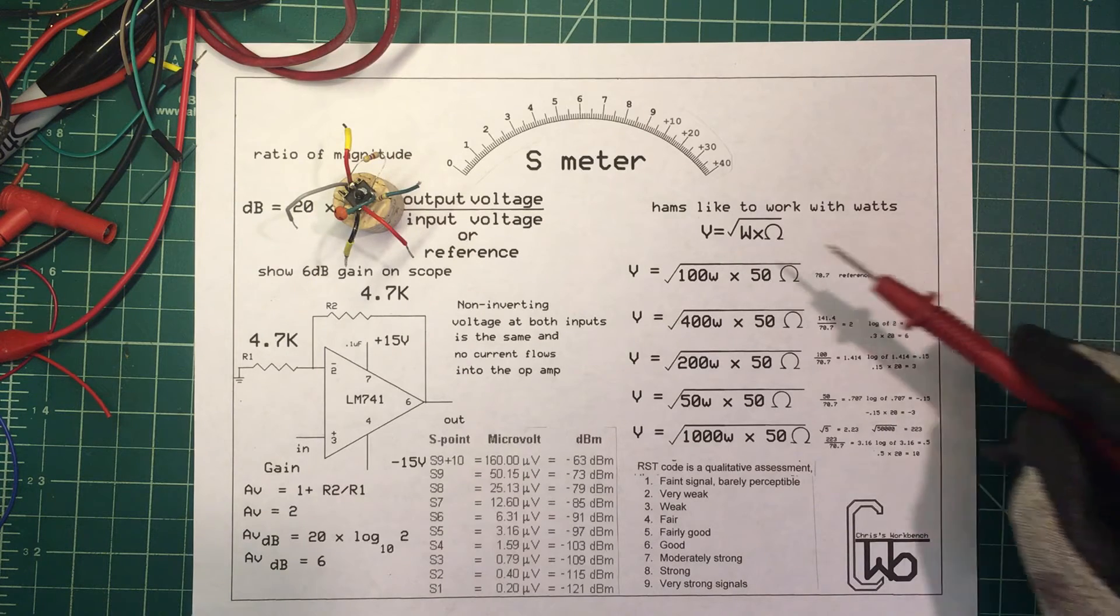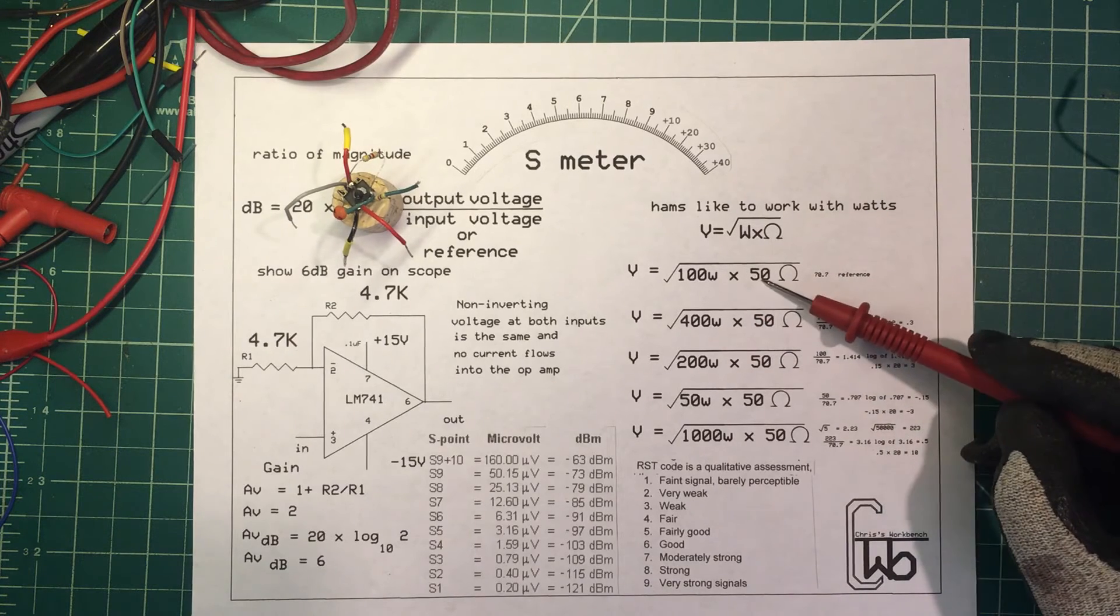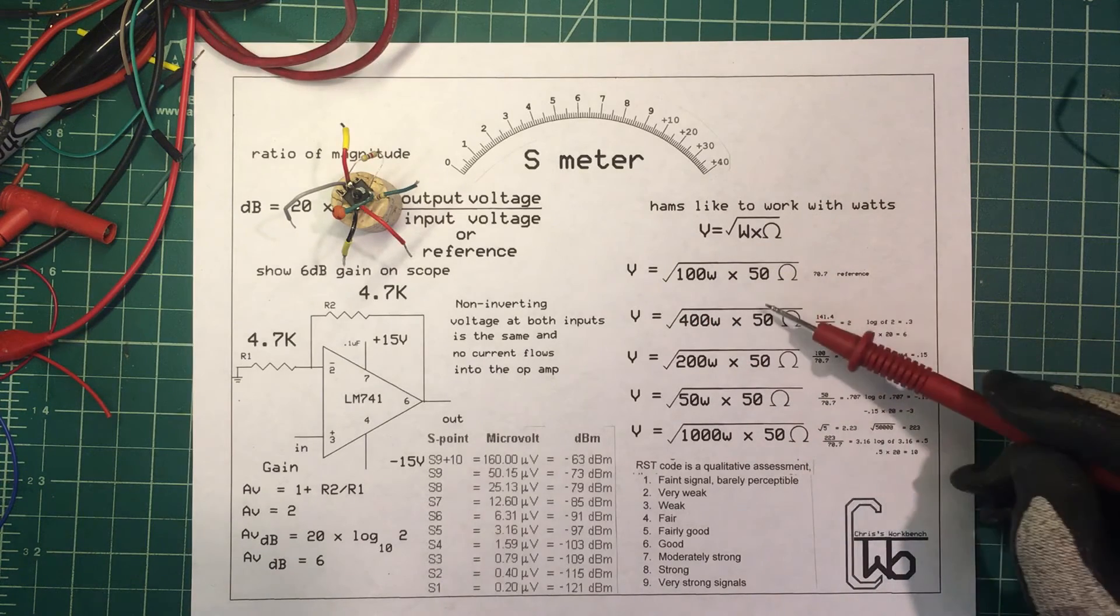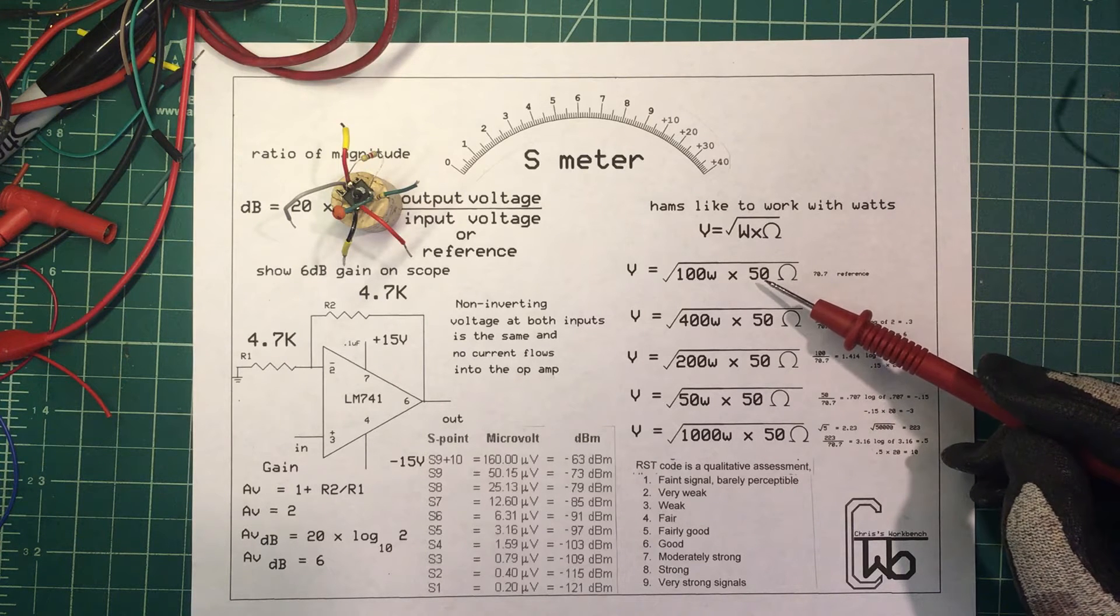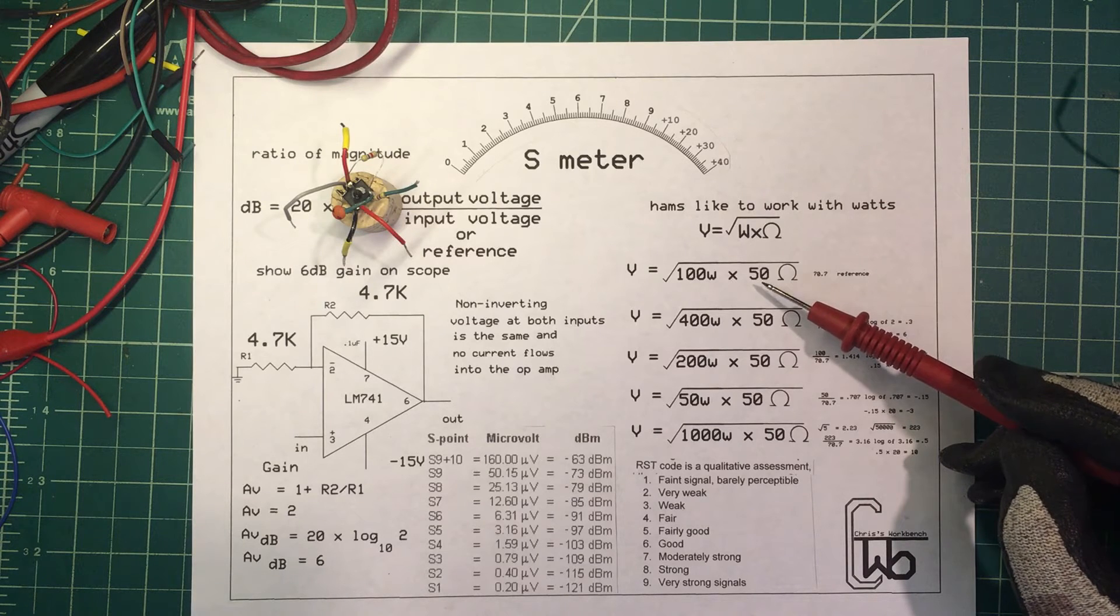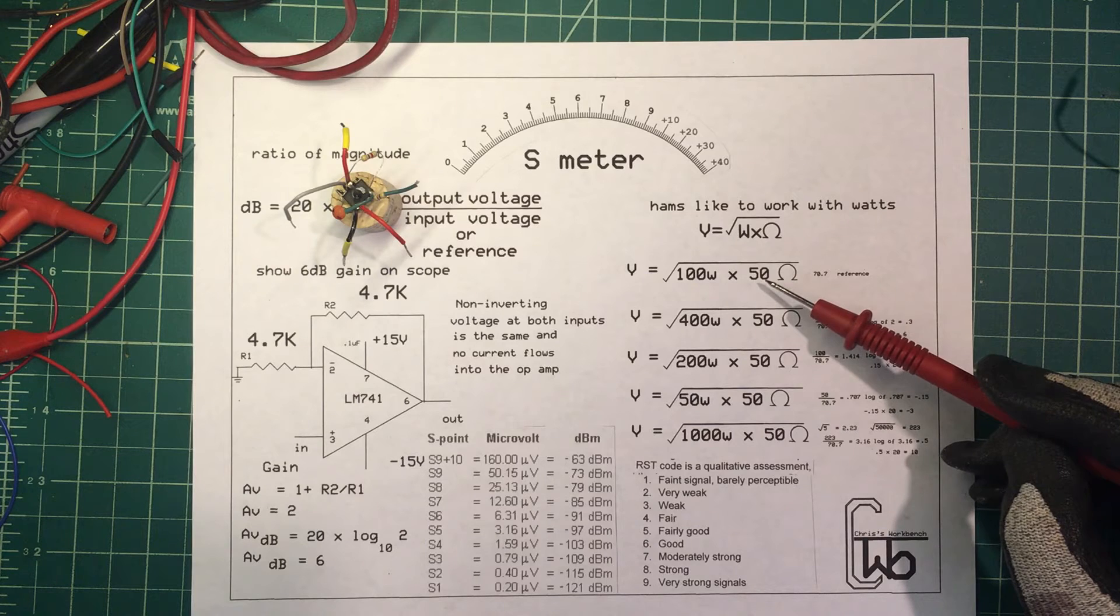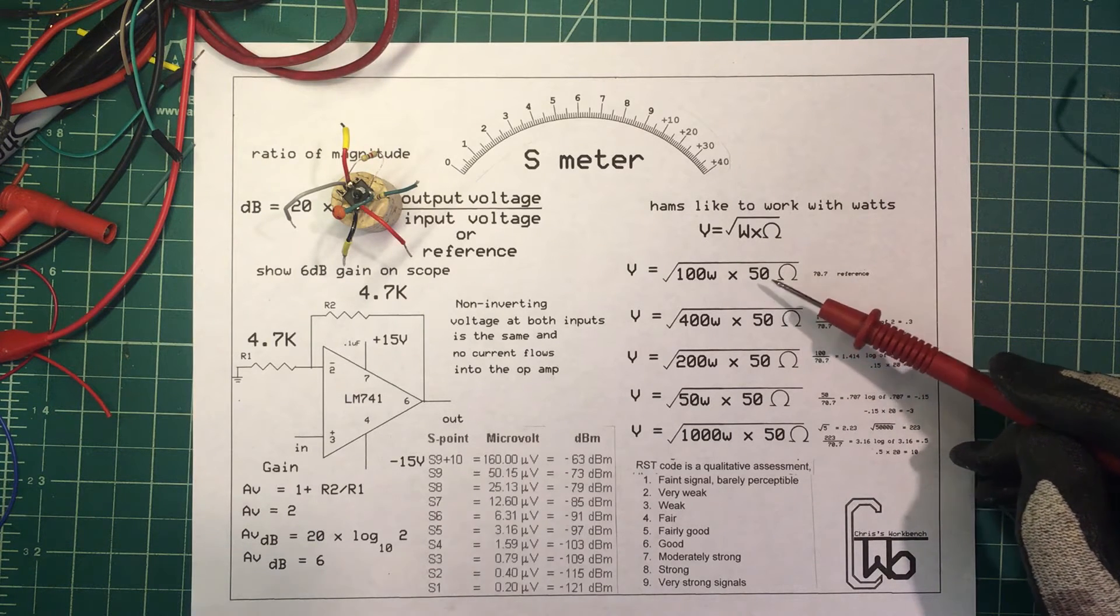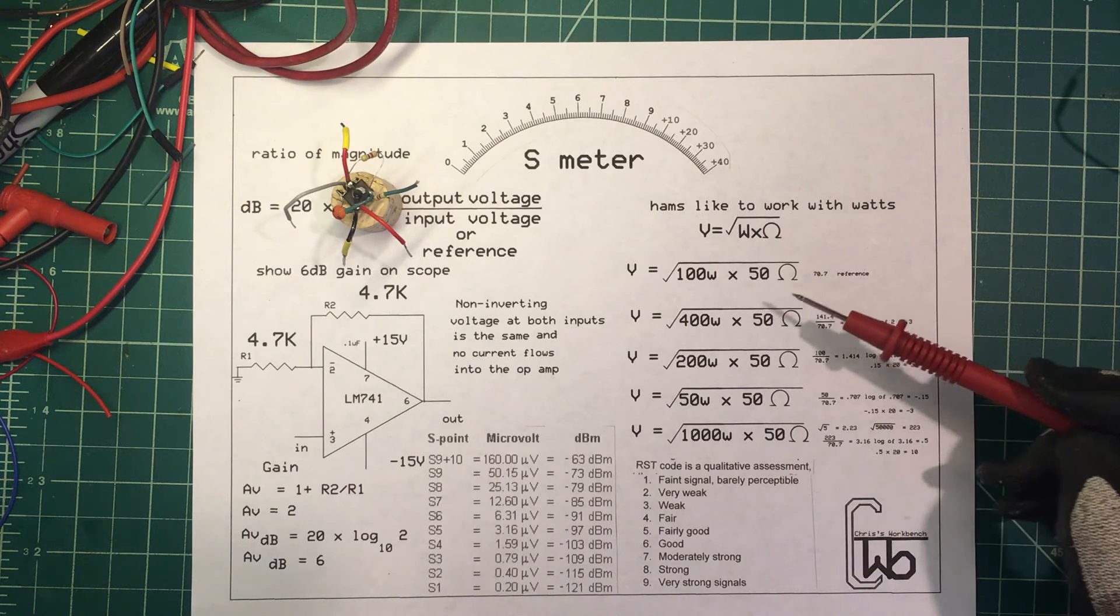Hams like to work with watts, and they know that voltage is equal to the square root of watts times ohms. So if we take a 100 watt transmitter and put it into a 50 ohm load, 50 times 100 is 5000. To get our voltage we take the square root of 5000. Now, in electronics you memorize the square root of 2 - 1.414. The reciprocal of that, if you divide it into one, is 0.707, and that's the same as the square root of one half or 0.5. So for 5000, we can massage the decimal around a little bit and it'll be 70.7 volts. We'll use that as a reference value.